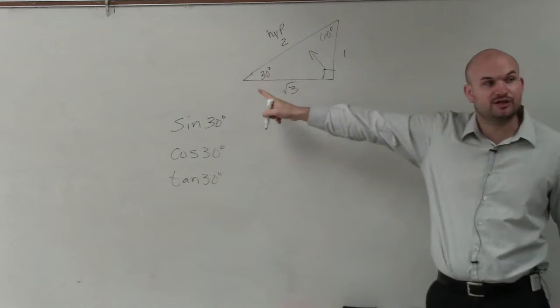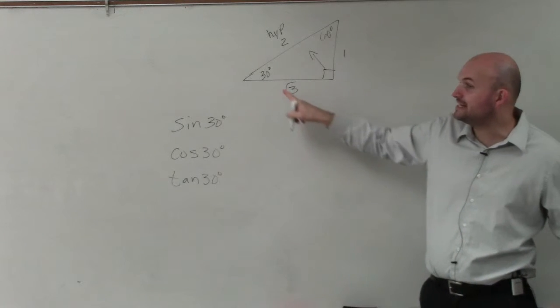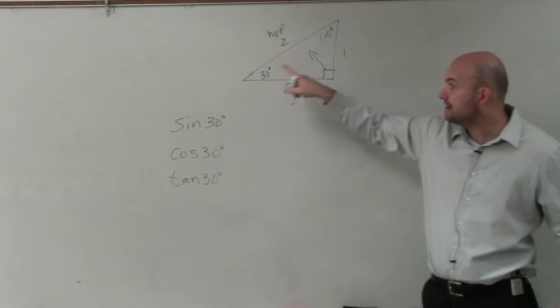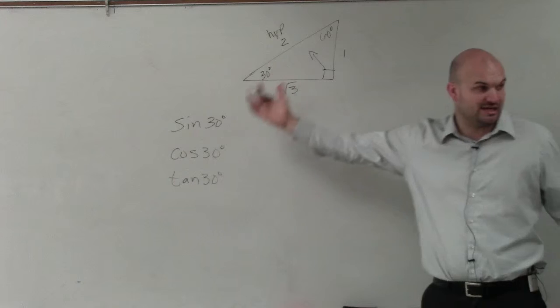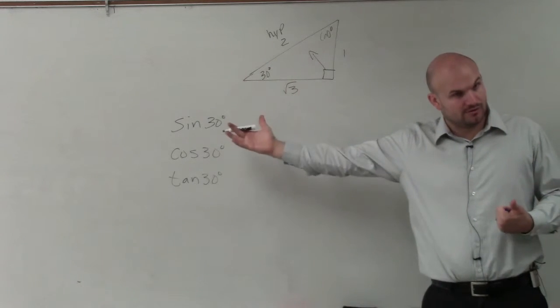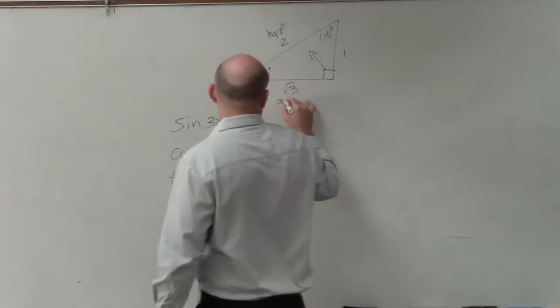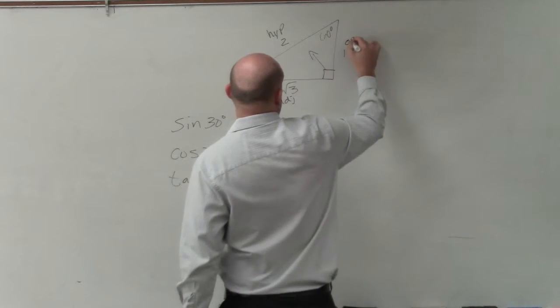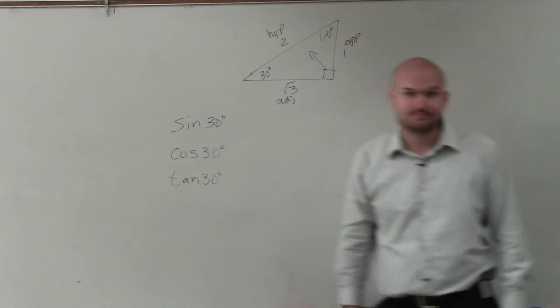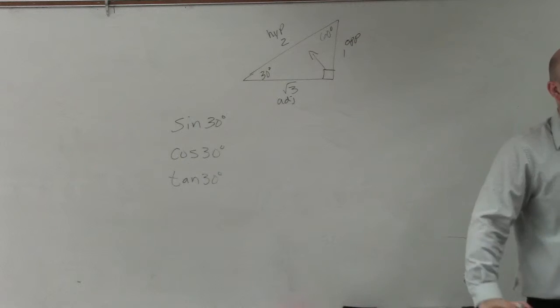However, when I'm talking about 30 degrees, remember the adjacent side is between 30 degrees and 90 degrees. Your adjacent side is always between your angle, theta, and 90 degrees. So this is my adjacent, and then this is going to be my opposite side. Always.